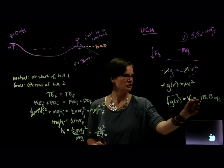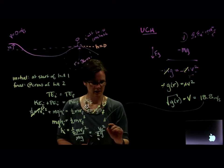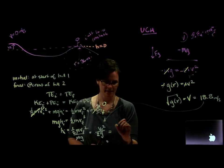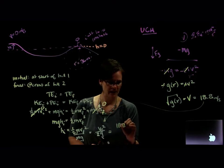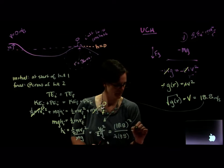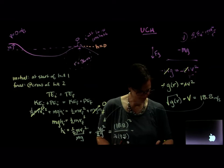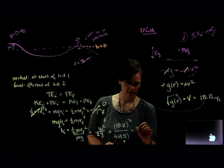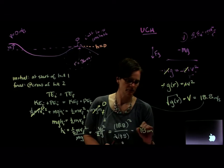That then we can use in our energy equation. And we have 18.8 squared over 2 times 9.8. So I square that and divide it by 2, divided by 9.8, and we get 18 meters.